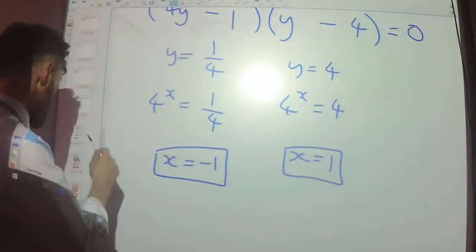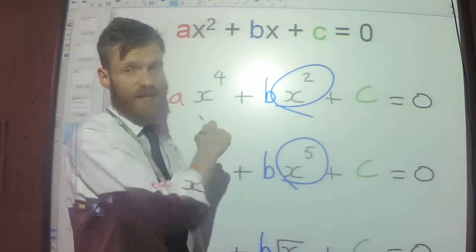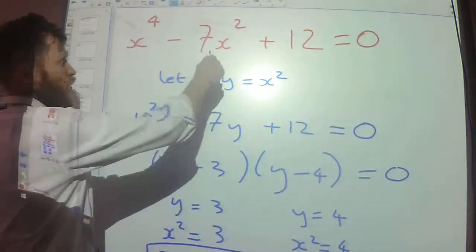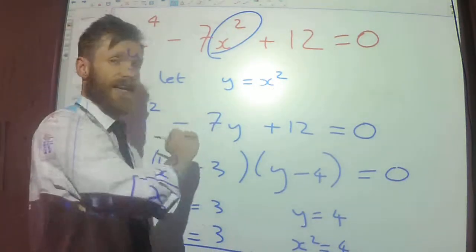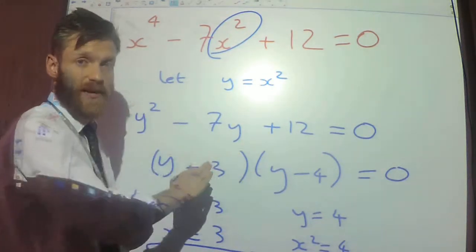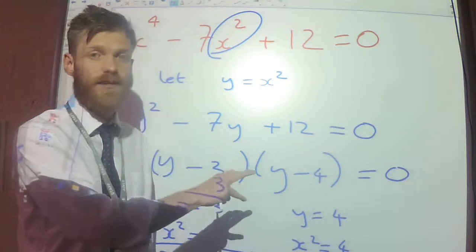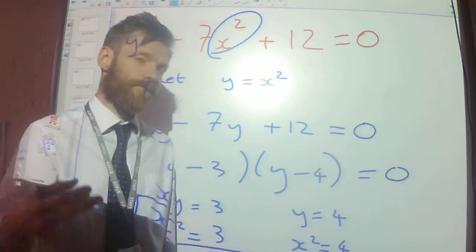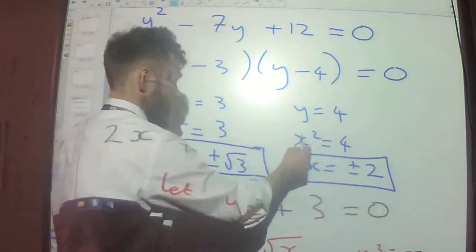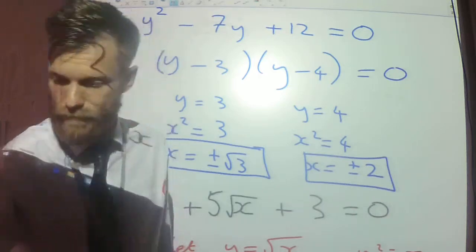So things to remember: hidden quadratics always have the term in the middle where if you can square that, you get the term at the front, and there is a constant at the end. The general approach is: whatever is in the middle, make that equal to another letter, so that letter squared will equal the front. You can then solve that quadratic to work out what the new letter is — whether it's y or a — and then remember your substitution to swap that back, so you can work out what the actual variable in the question is. That's it.